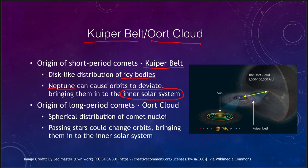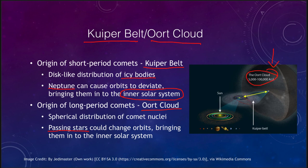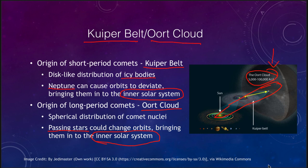Long period comets exist out in what we call the Oort cloud — a very large spherical distribution of cometary nuclei. They were probably pushed out there when the solar system was forming, as icy objects that came close to Jupiter, Saturn, or other giant planets could get kicked out and end up in the Oort cloud, still orbiting the sun on very large orbits. The Oort cloud extends out to 100,000 astronomical units, and passing stars can come within that distance, deviating orbits and bringing comets into the inner solar system. Neptune in the Kuiper belt could do the same thing.